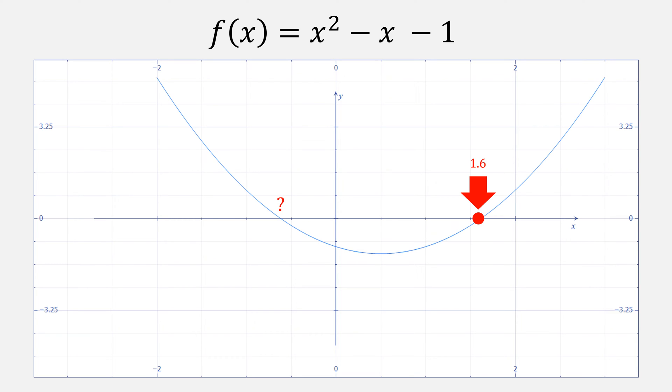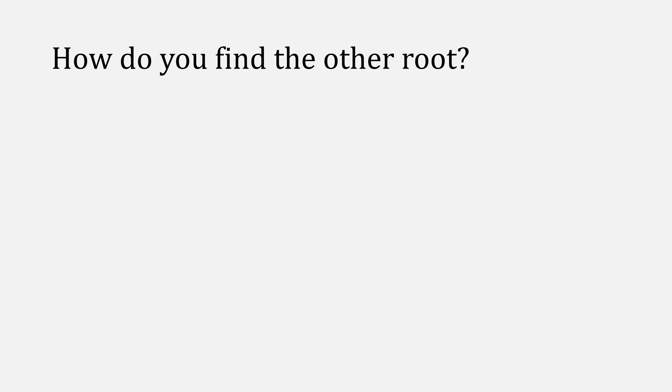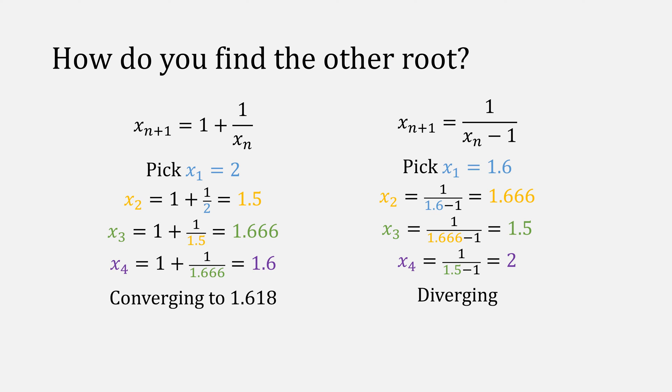But what about the other root? Is there a way to find the other root using the same approach? Let's look back at our two main examples. Our first one on the left, 1 plus 1 over x, converges to 1.618, and our function on the right diverged.